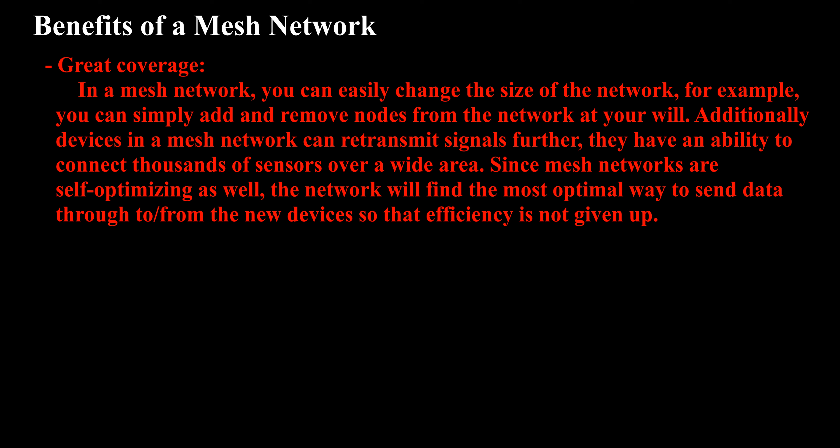Great coverage: in a mesh network, you can easily change the size of the network — for example, you can simply add and remove nodes at will. Additionally, devices in a mesh network can retransmit signals further and have the ability to connect thousands of sensors over a wide area. Since mesh networks are self-optimizing, the network will find the most optimal way to send data through new devices so that efficiency is not given up.